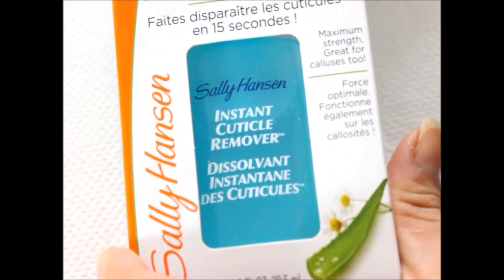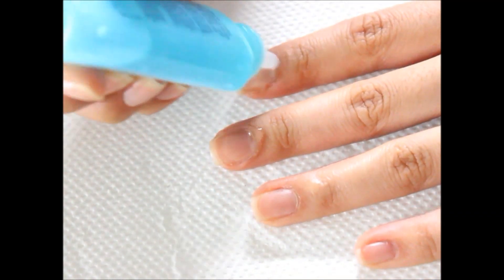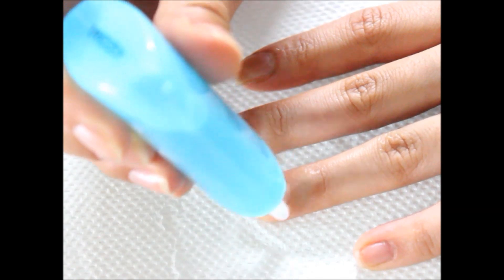I like to start off with Sally Hansen's Instant Cuticle Remover and I apply this to my cuticles and instantly they will soften my cuticles and prep them for the next step.